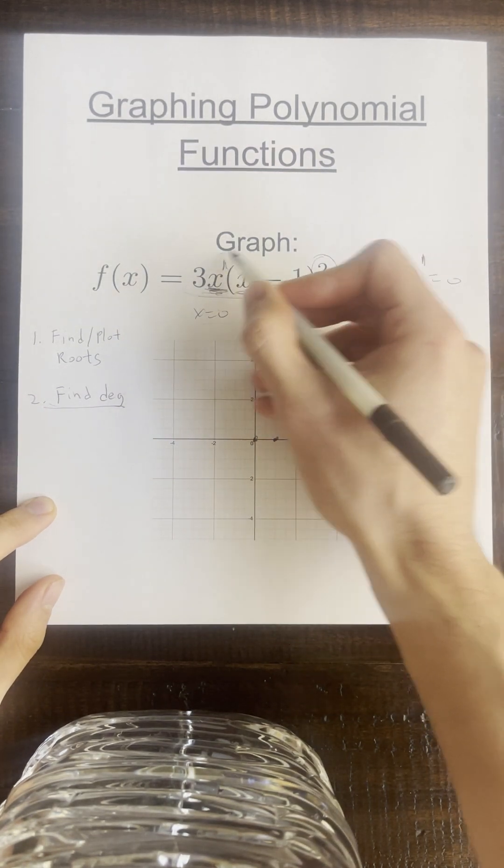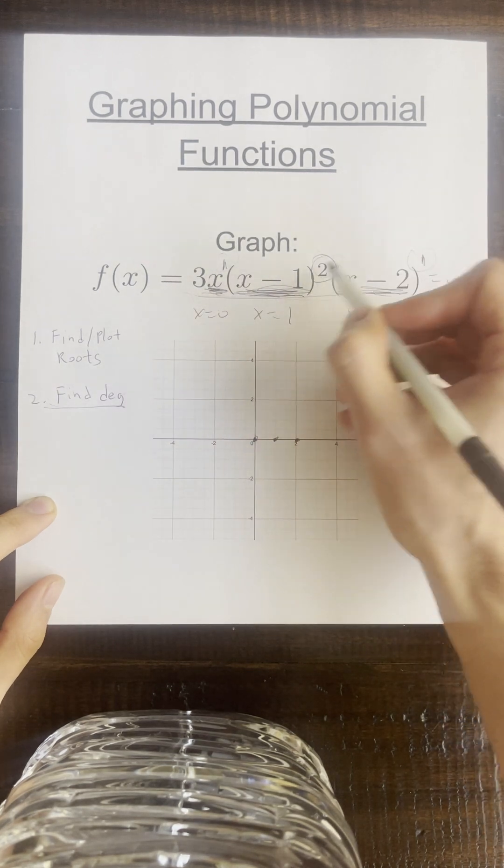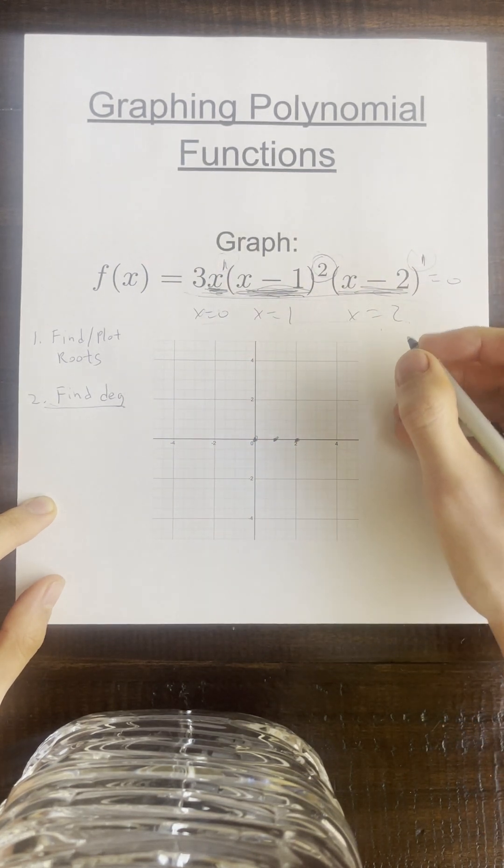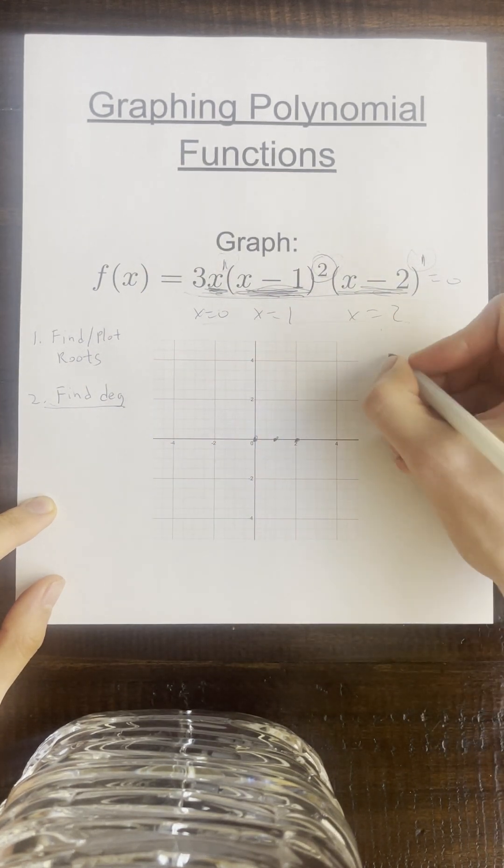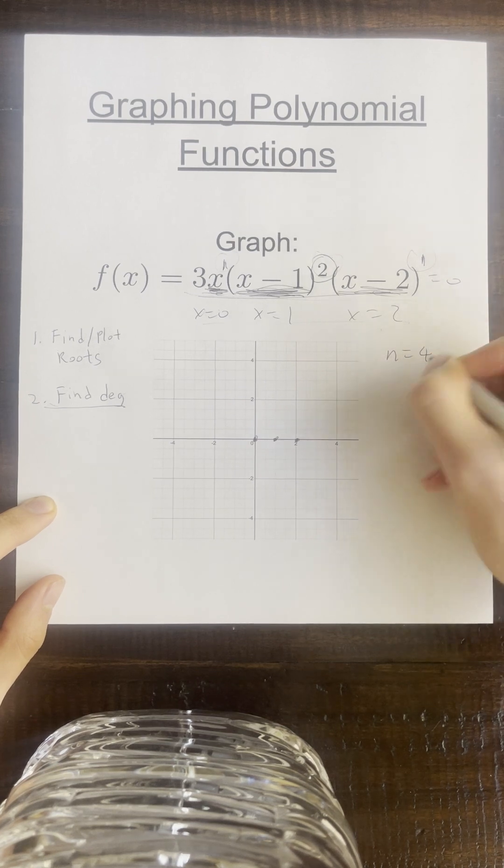And what we're going to do is we're going to add these exponents. So one plus two plus one is how much? It's going to be four. So I'm just going to write n equals four. And that's the degree.